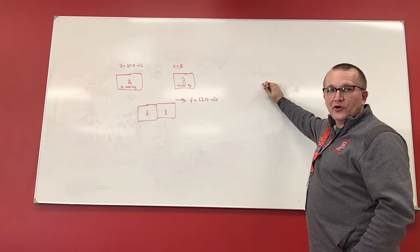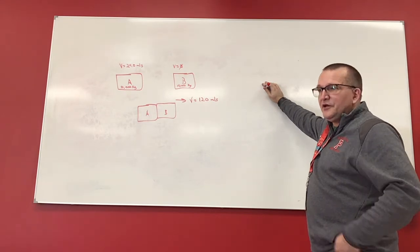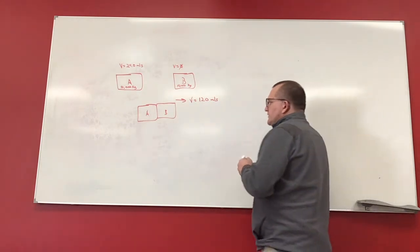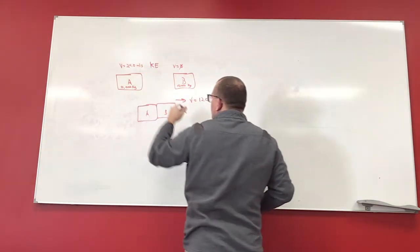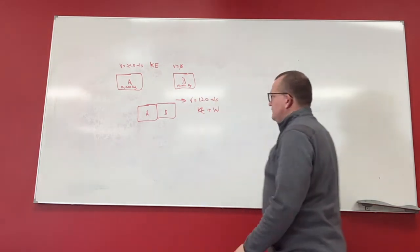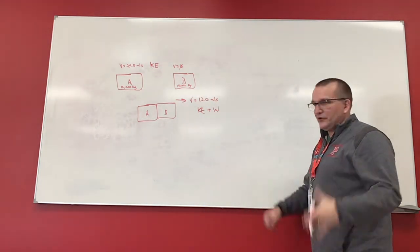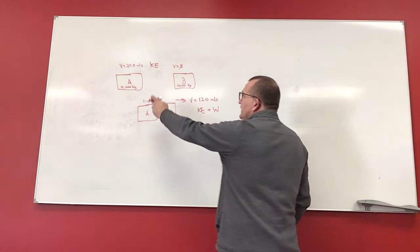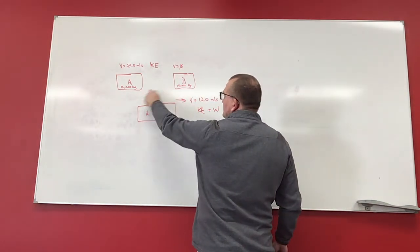So all we want to do is look at the information provided, kinetic energy before equals kinetic energy after, plus some work. So essentially what we're saying is this kinetic energy is going to be equal to this kinetic energy, plus some thermal energy that we're going to lose due to work. So we find the kinetic energy here, which this has none, so it's all this.